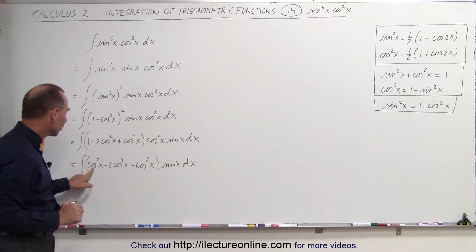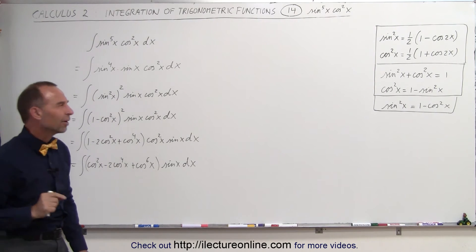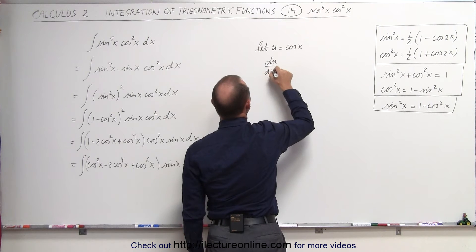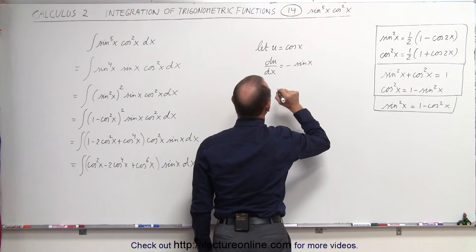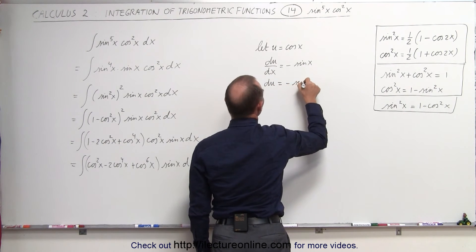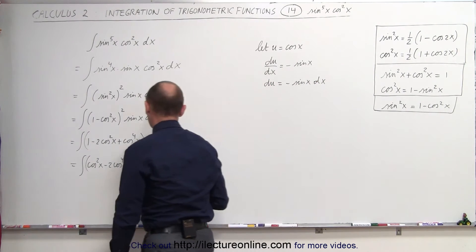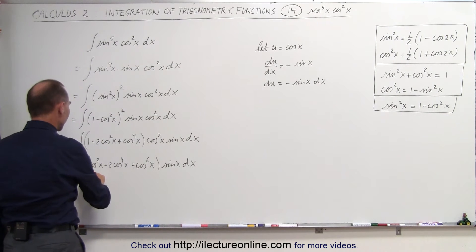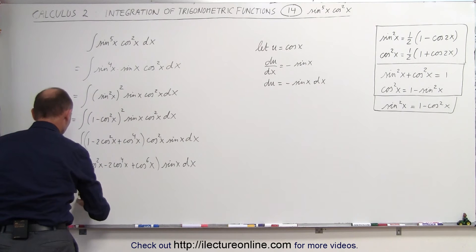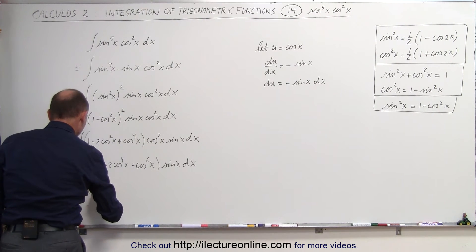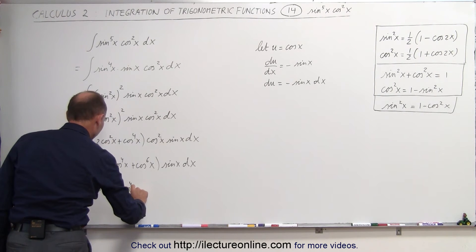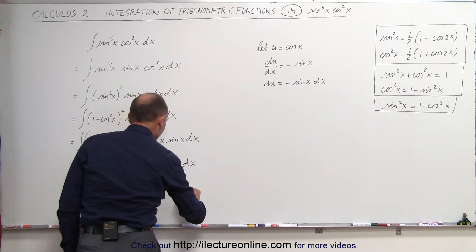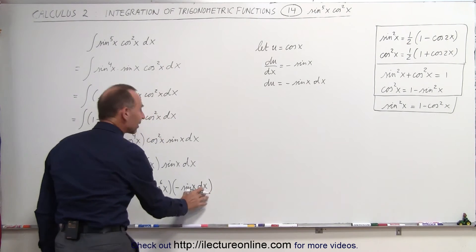Notice that the differential of cosine of x involves sine of x. Let u equal the cosine of x; then du/dx equals the derivative of cosine, which is negative sine of x. Thus du equals minus sine of x dx. We have a positive sine of x dx, so we need to make that a negative. Changing all the signs, we get the integral of negative cosine squared of x plus 2 times cosine to the fourth of x minus cosine to the sixth of x, times negative sine of x dx, which is exactly du.